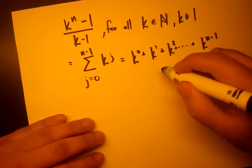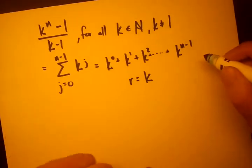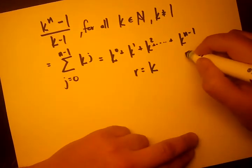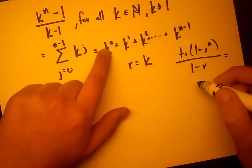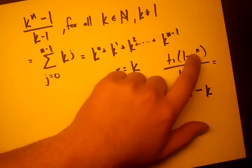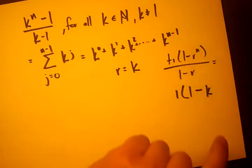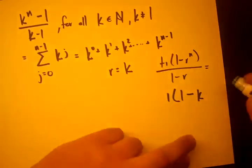So this is a geometric series with common ratio equals k, and it's finite geometric series, so our formula is going to be t1 times 1 minus r to the n over 1 minus r. So t1 is k to the 0, which is 1. 1 minus r is k in this case, and n is how many terms there are in the sequence, so going from 0 to n minus 1, there's n terms.